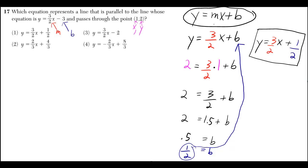So I just replace that where I see the m. So instead of putting m, I'll put 3 halves. We still don't know what the b is yet though.